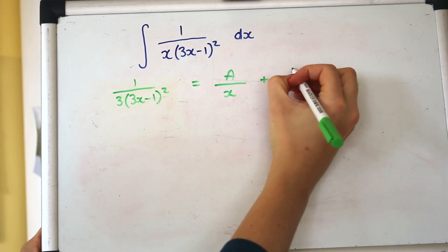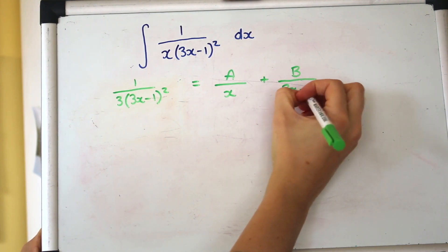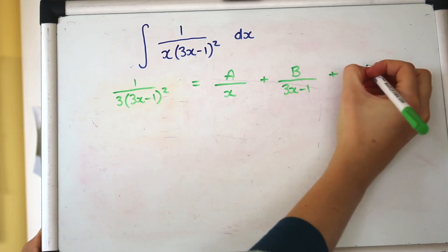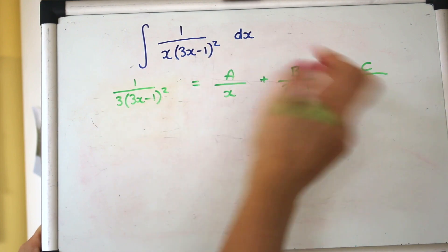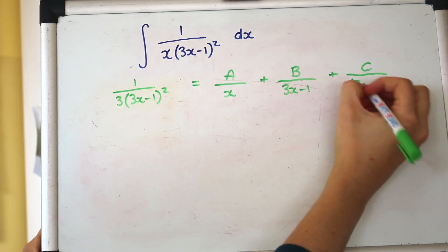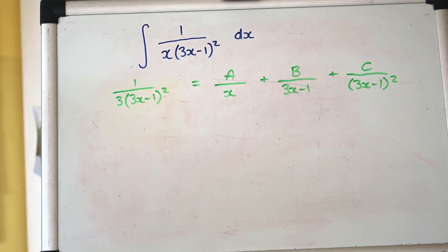Okay this one's a little bit more complicated because it's got that squared factor. So I hope you remember from your partial fractions that you need a factor of that 3x minus 1 but then you also need to include the factor when it's squared so we'll have three different elements to this one.